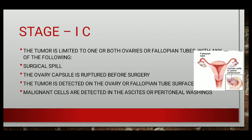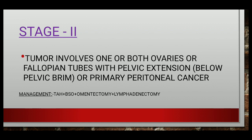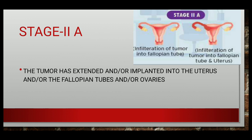In stage 2, the tumor involves one or both ovaries or fallopian tubes with pelvic extension below the pelvic brim, or primary peritoneal cancer. Management is by total hysterectomy plus BSO plus omentectomy plus lymphadenectomy. In stage 2a, the tumor has extended and implanted into the uterus or fallopian tubes or ovaries — so the uterus now becomes involved.